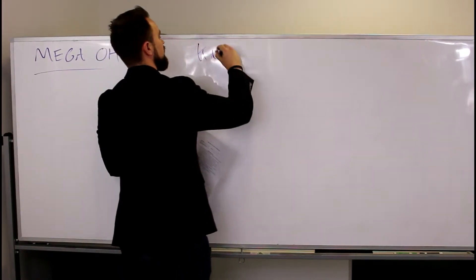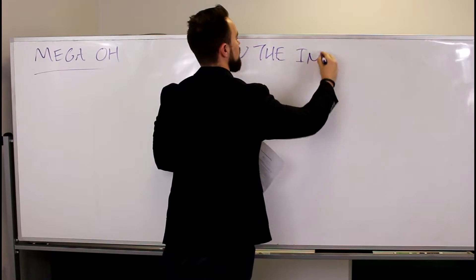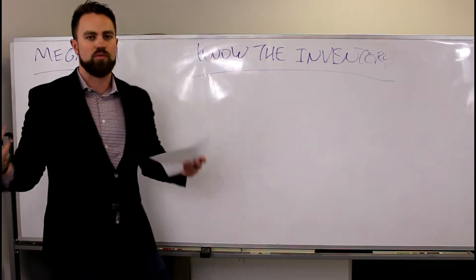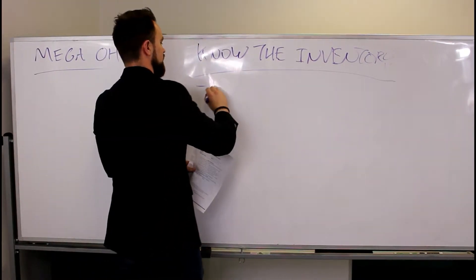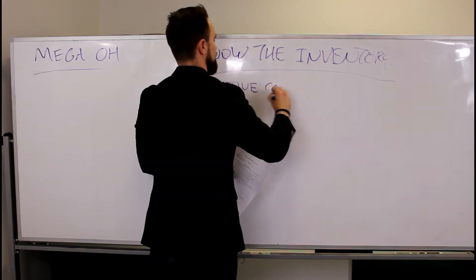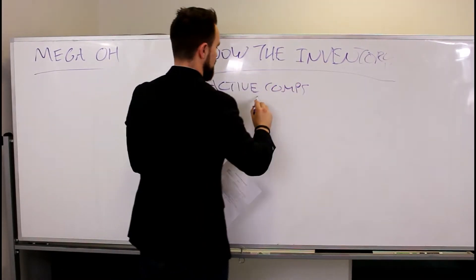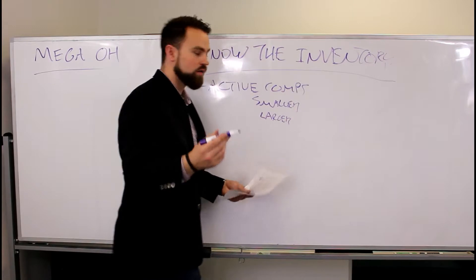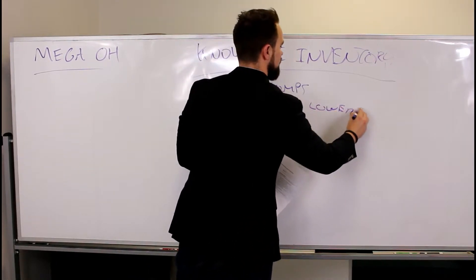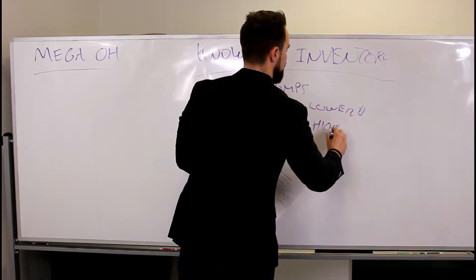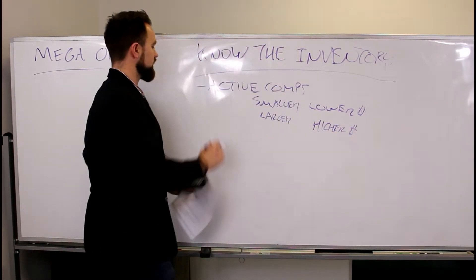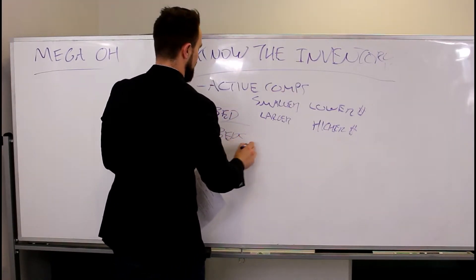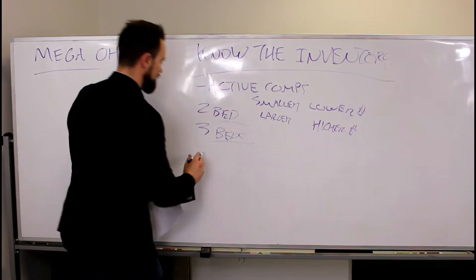This is super important: know the inventory. This is part of your prep work — print out the active comps and also find homes that are smaller, larger, lower in price, or higher in price. Maybe your property is a two-bedroom — also find the three-bedrooms that are close by. Know the active comps and know the pending comps.